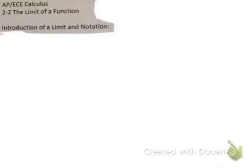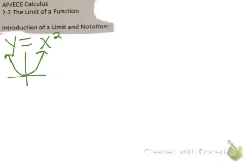Starting with a simple function, y equals x squared. We know the graph of x squared is a parabola, and if I asked you what's the limit of this function as x approaches 1?